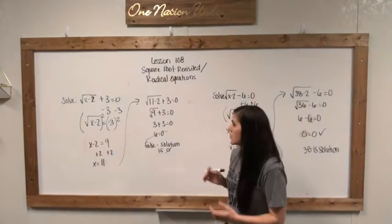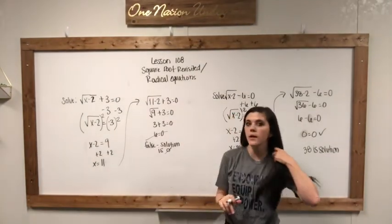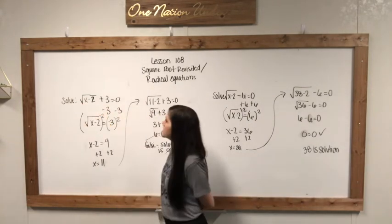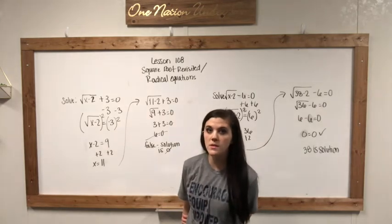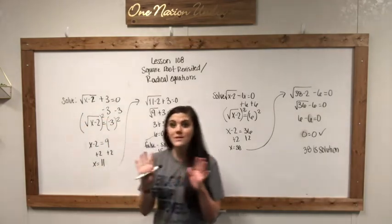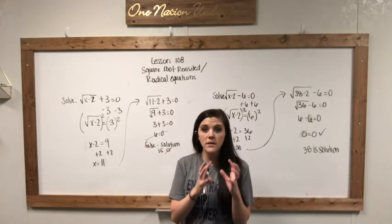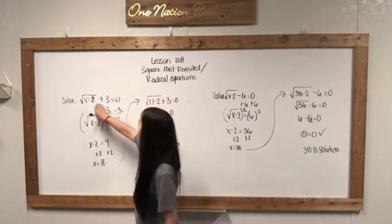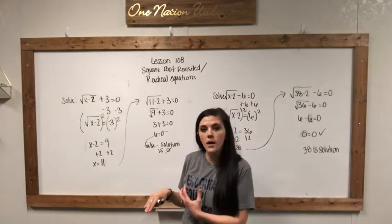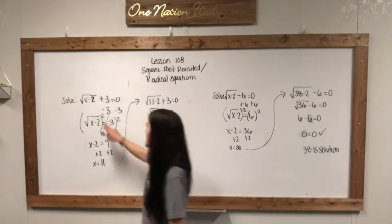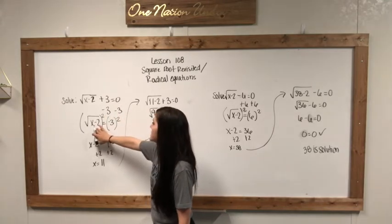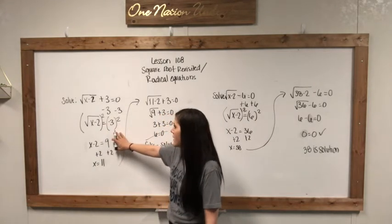Now we're going to take that information and solve equations using that. So first we have a problem that says: solve the square root of x minus two, plus three, equals zero. This x minus two is all that's in the radical. I'm going to start by isolating the x — first move this three to the other side of the equation. It's a positive three, so we're going to subtract it from both sides: minus three, minus three. So now I have the square root of x minus two equals negative three.